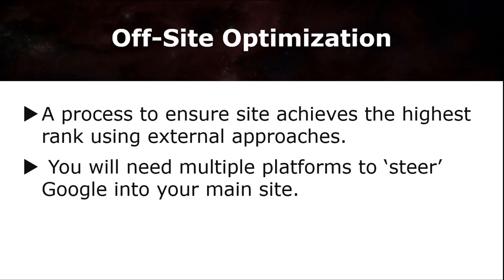Let's move on to the second agent, which is the off-site optimization. Off-site optimization is a process of ensuring your site achieves the highest rank using external approaches. Simply put, it's not optimized within your site — you'll need other sites and multiple platforms to steer Google into your main site.